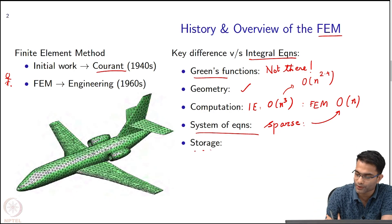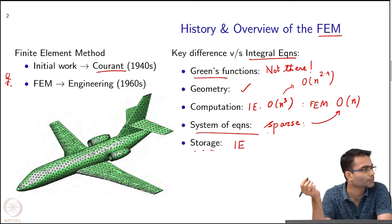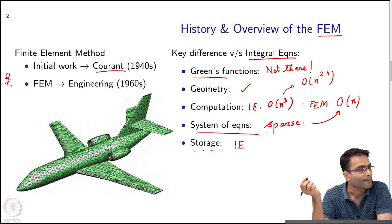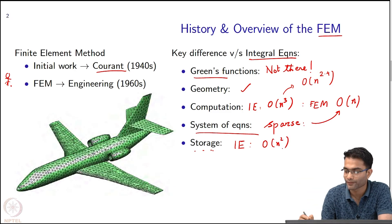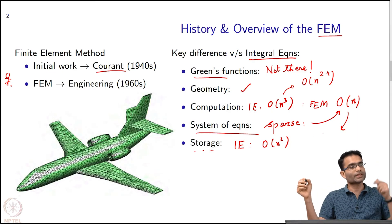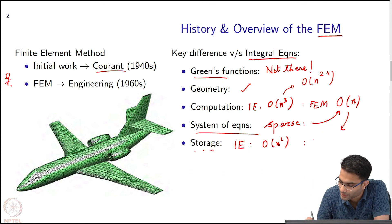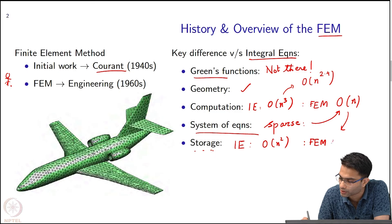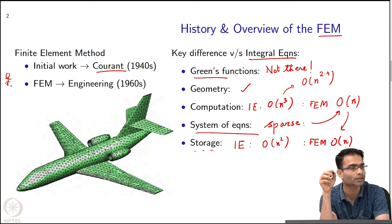Then the storage of the system of equations. In the case of integral equations for storing n by n system you need how much memory? N squared right. Storage in integral equations was order n squared, whereas in FEM because I have a sparse matrix, N equations, each equation sparse means very few entries are nonzero. The number of entries in FEM is again order n. Both in terms of storage and computation, FEM is a big winner.